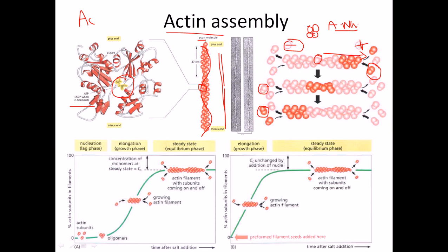A concept that most students misunderstand is that they think polymerization only occurs at the positive end and depolymerization only at the negative end, but that is not the only case. Actin assembly also occurs at the negative end, but the rate of actin assembly at the negative end is much lower than the rate at the positive end. Similarly, the rate of disassembly at the positive end is much lower than the rate of disassembly at the negative end.